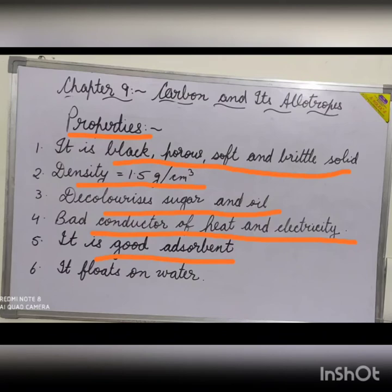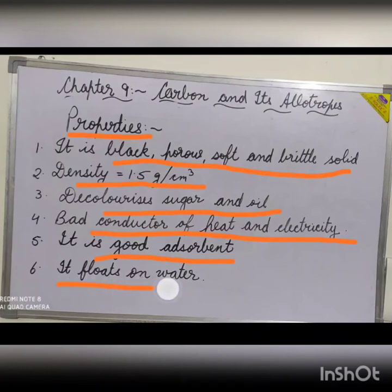The adsorption capacity of wood charcoal increases when it is heated at about 900 degrees Celsius, because the pores open and increase its capacity to hold more gas. Such charcoal is called activated charcoal. Wood charcoal floats on water although it is heavier than water, due to the presence of adsorbed air in its porous surface.